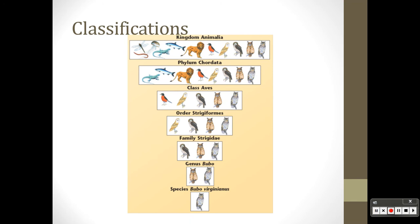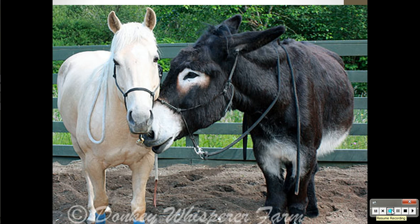An example is a donkey. So a male donkey plus a female horse will give you a mule. Now two mules cannot make another mule. A male lion and female tiger will make a liger, but two ligers will not make another liger, so they're not a new species.